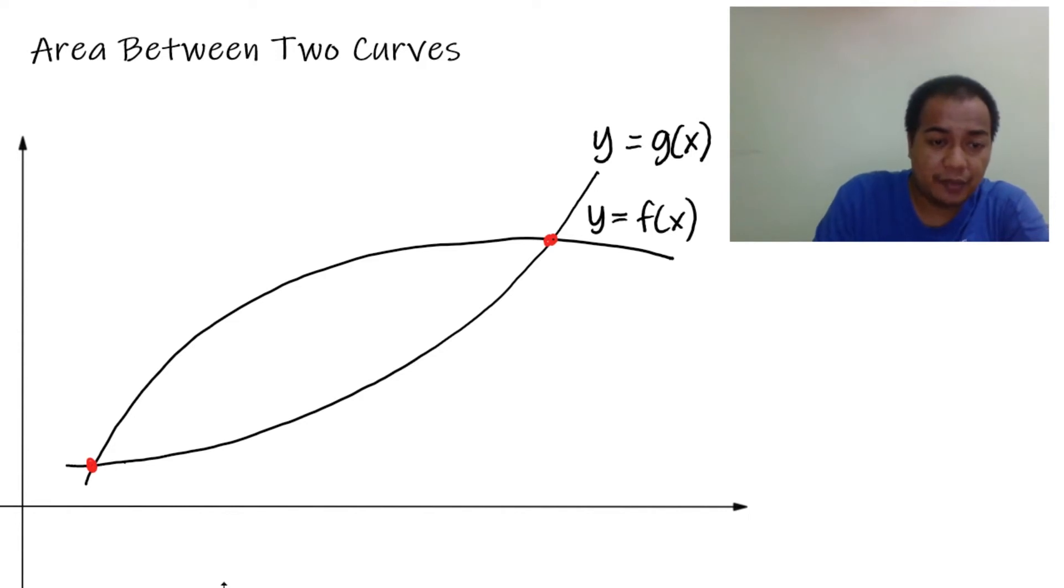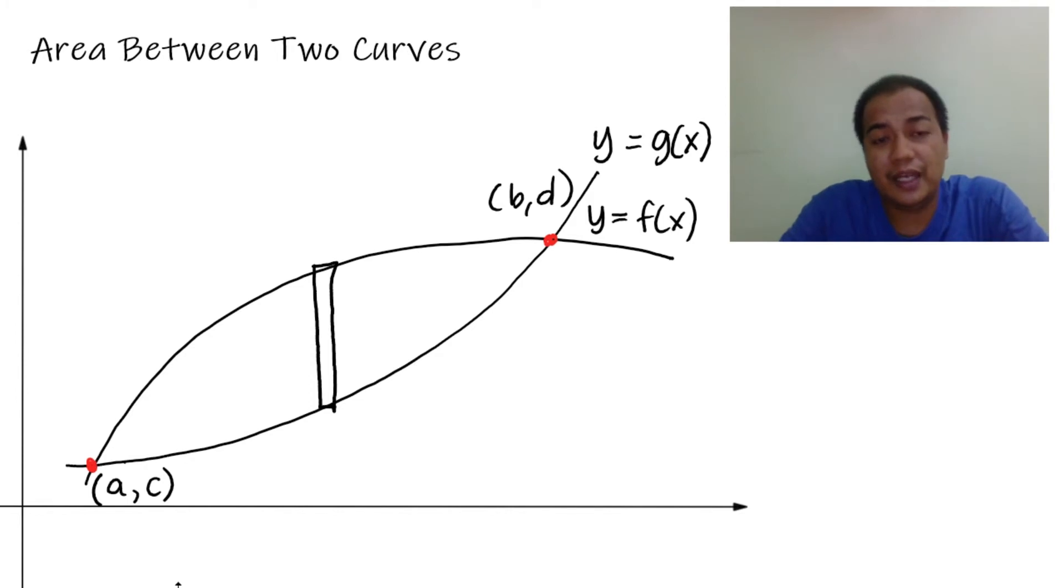In this case, let us have an arbitrary point. At the lower point of intersection, we have point (a,c), and for the upper point, we have (b,d). Now, after calculating the points of intersection, we need to draw a rectangular element, like what we did in area under the curve.